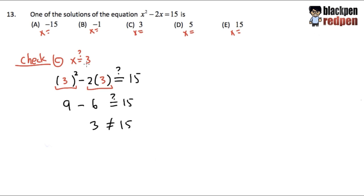This means that when x is equal to 3, it will not satisfy our original equation. Therefore, choice C is not the correct answer. So let me get rid of choice C.